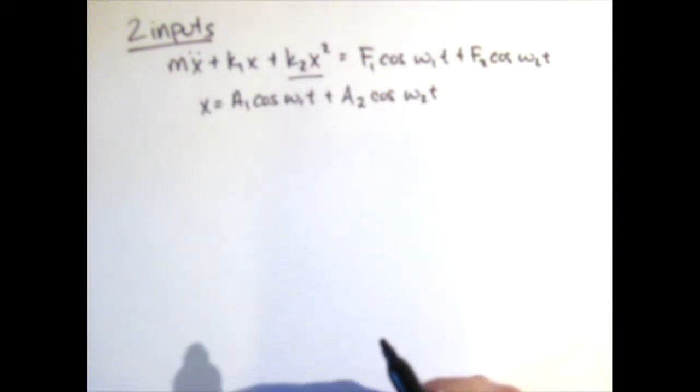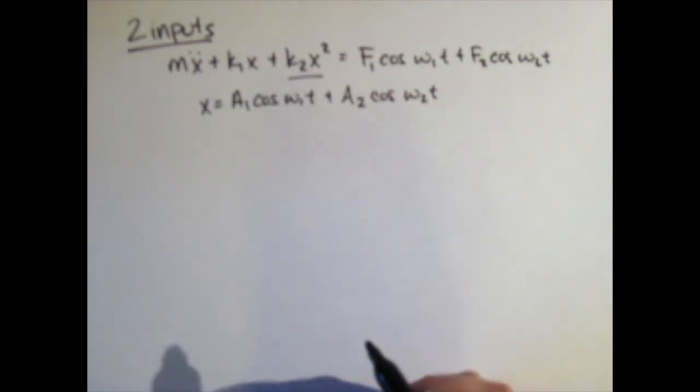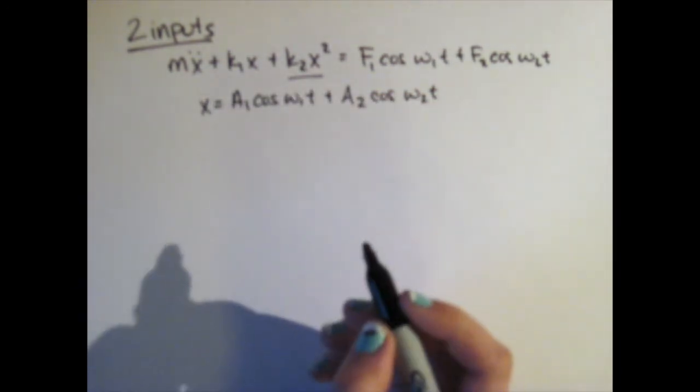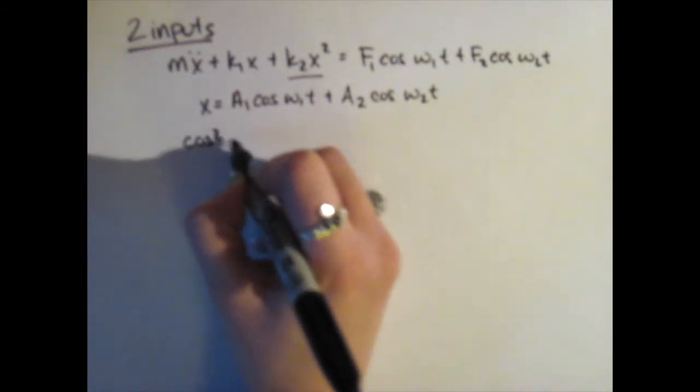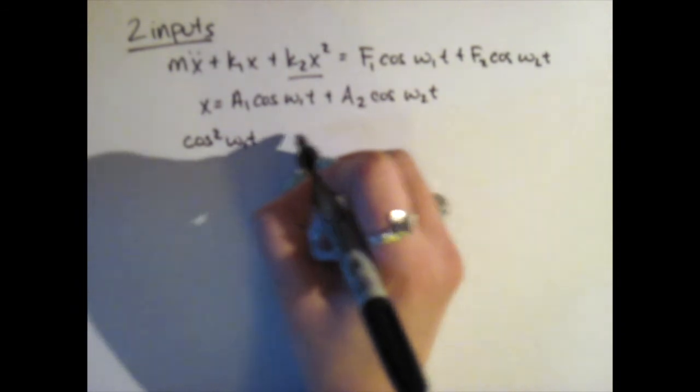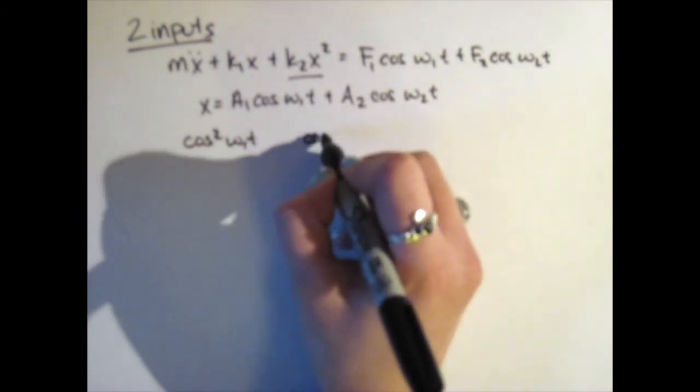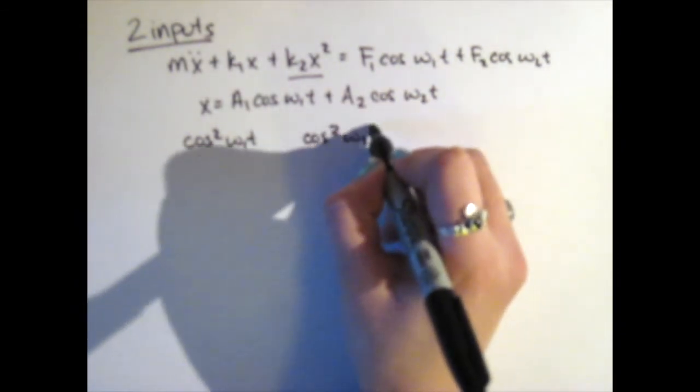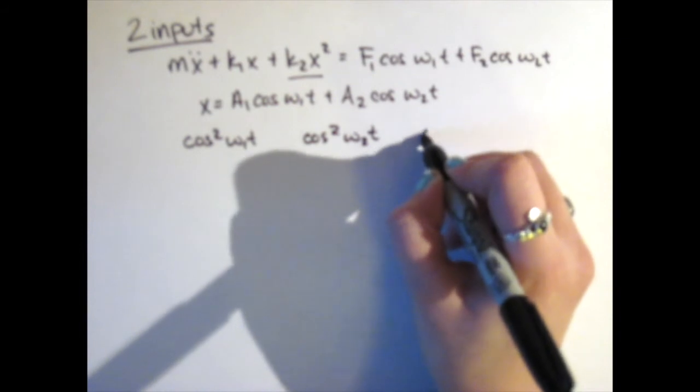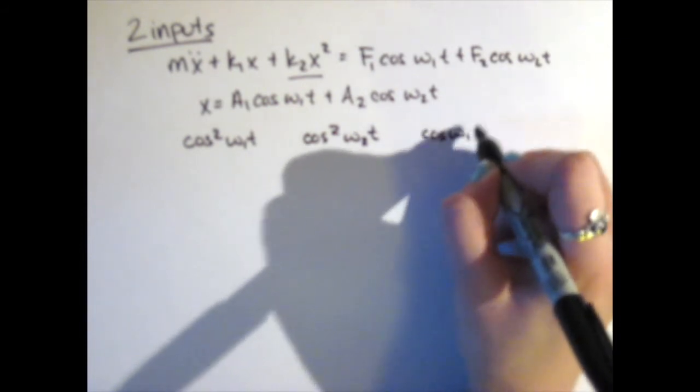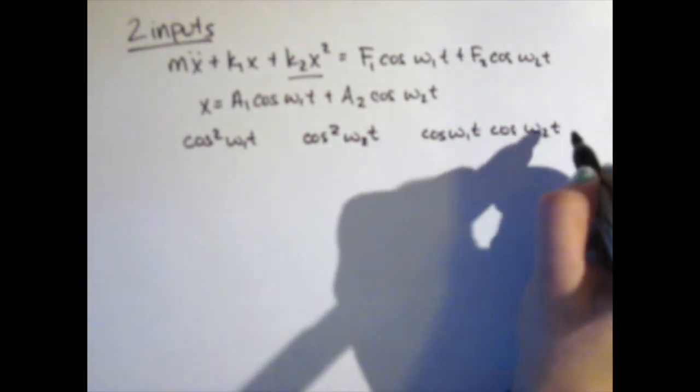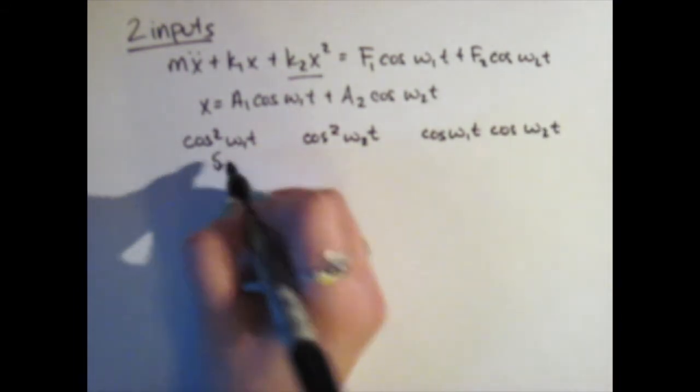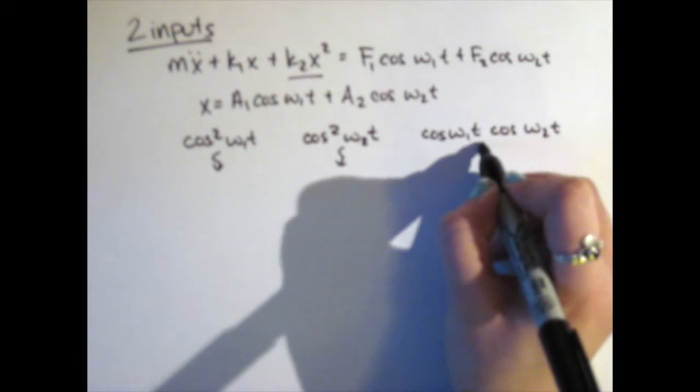Our first guess is going to be x equals A1 cosine omega 1 T plus A2 cosine omega 2 T. Now, since the squared term gives us our harmonics, we will once again look at the results from that. This gives us terms like cosine squared omega 1 T, cosine squared omega 2 T, and cosine omega 1 T times cosine omega 2 T.